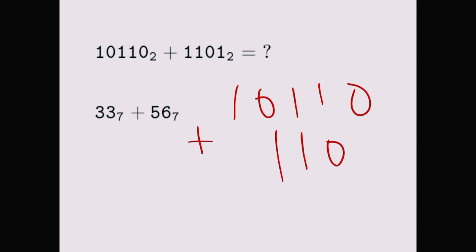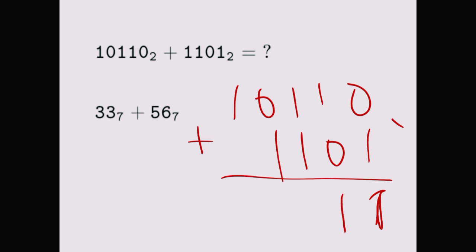Plus 1101. So we have zero plus one which is one. Here we have one plus zero which is one. Then the next we have one plus one. Now one plus one is two, but we can't write two — that's because in base two only zero and one exist. There is no two in base two. So what I do is divide by the base which is two, then write the remainder.